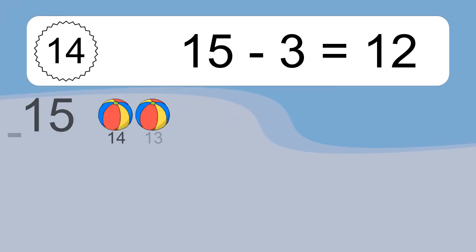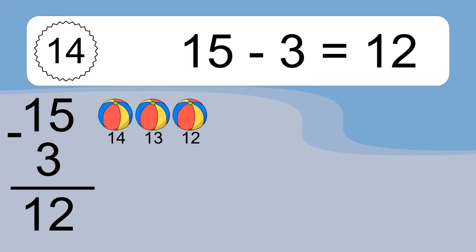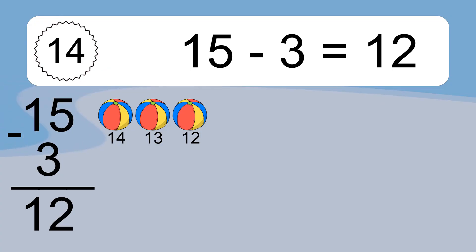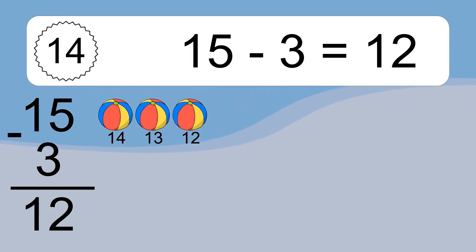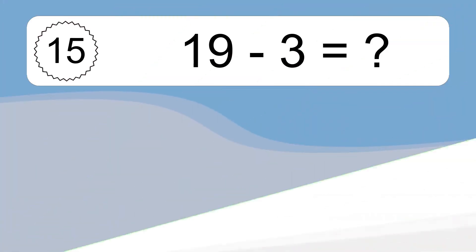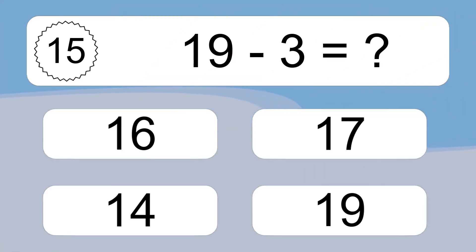15 minus 3 equals what? 15 minus 3 equals 12. Let's count it: 14, 13, 12.